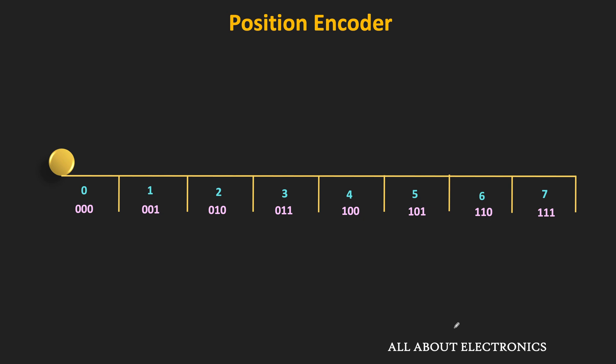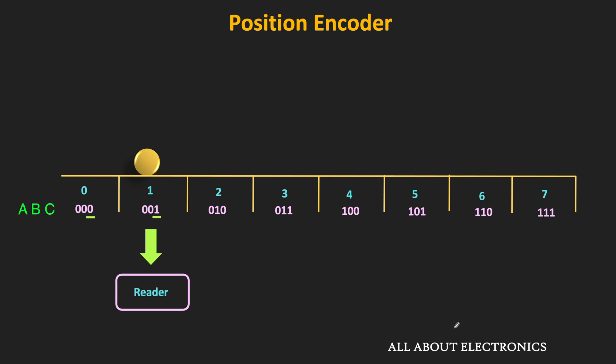The presence of the object in a particular zone is detected using a position sensor. Here, the 3 position sensors A, B, and C represent the 3 bits, effectively representing the 8 zones. Initially, let's say the object is in zone 0, and correspondingly the output of the sensor is 000. When the object moves from zone 0 to zone 1, the output changes to 001 — only one bit changes, meaning only the output of sensor C is changing. This output is read by a reader, which is typically a digital circuit.